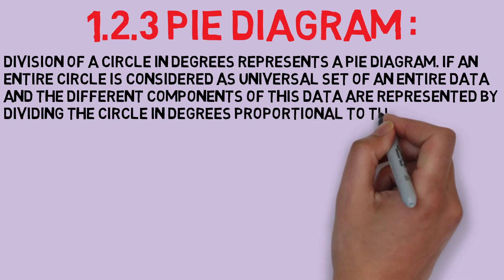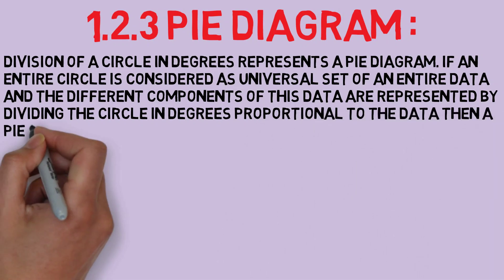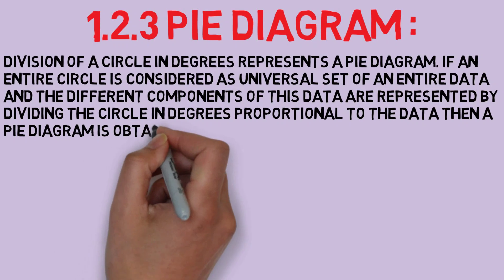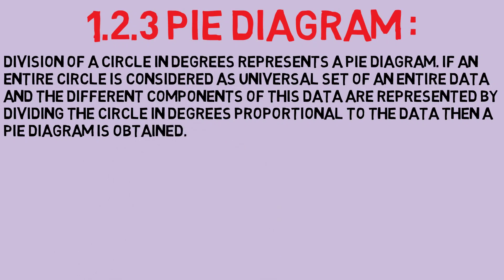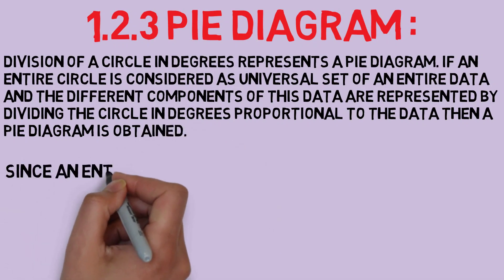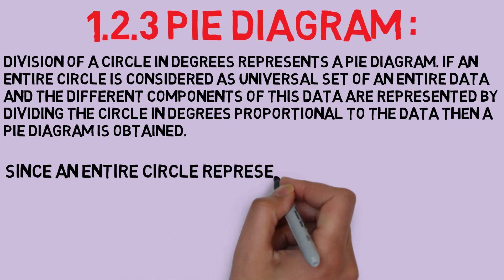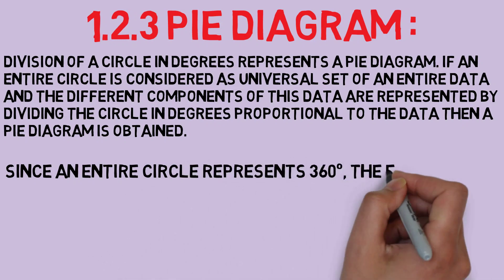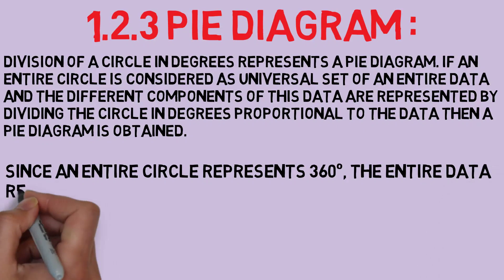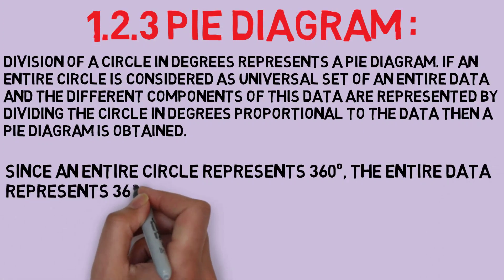As we all know, the entire circle represents 360 degrees. To make these types of diagrams, the data formula represents 360 degrees and divisions of the data are represented by dividing the circle in degrees proportional to each data section.